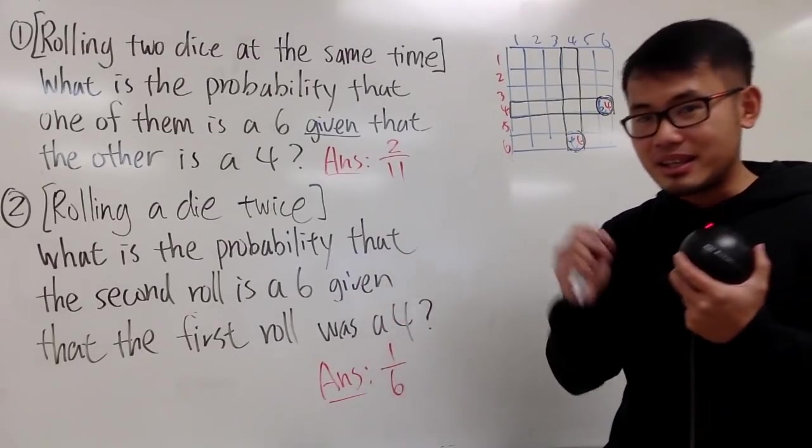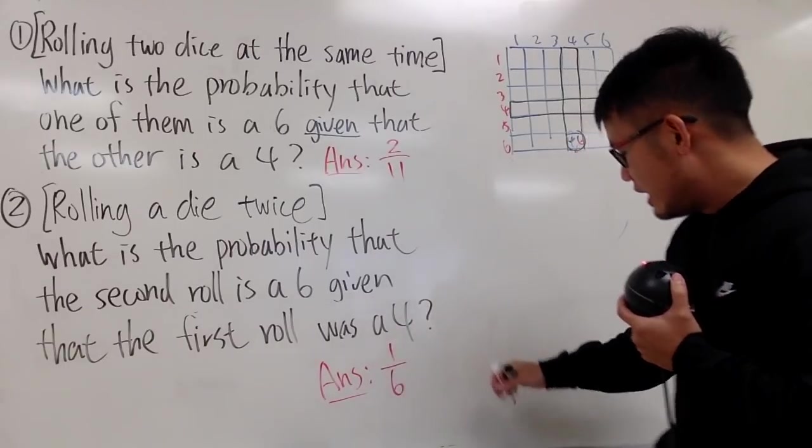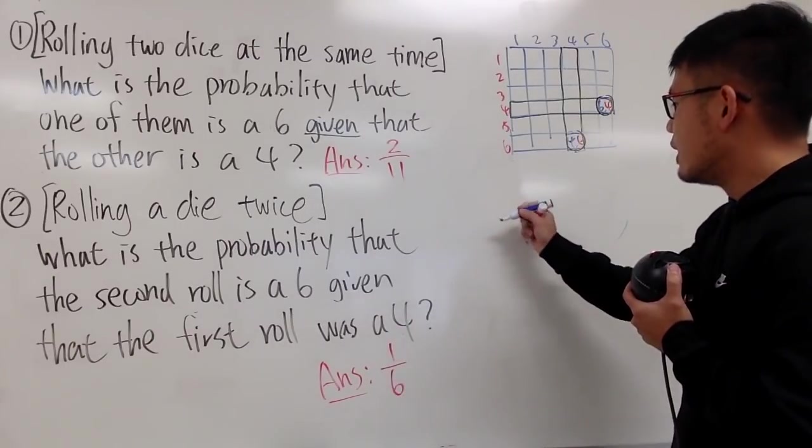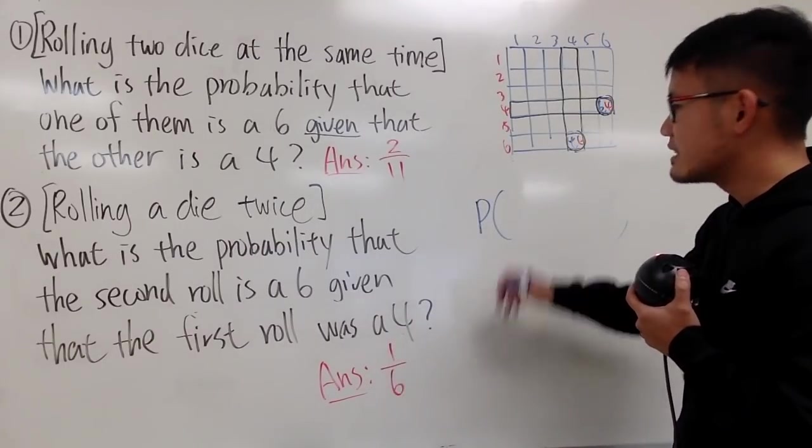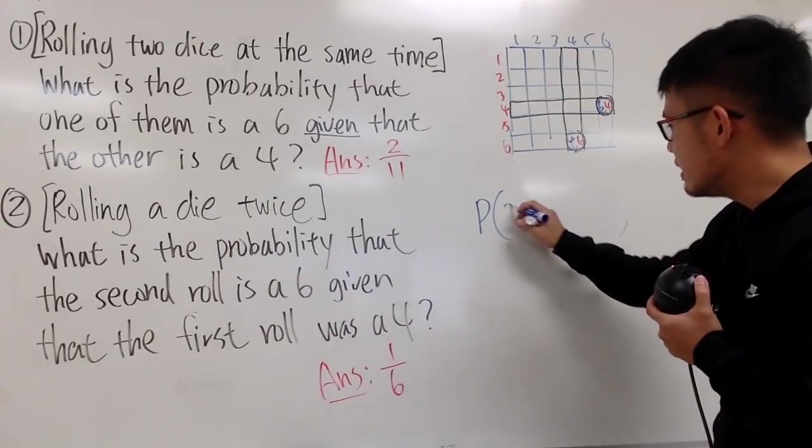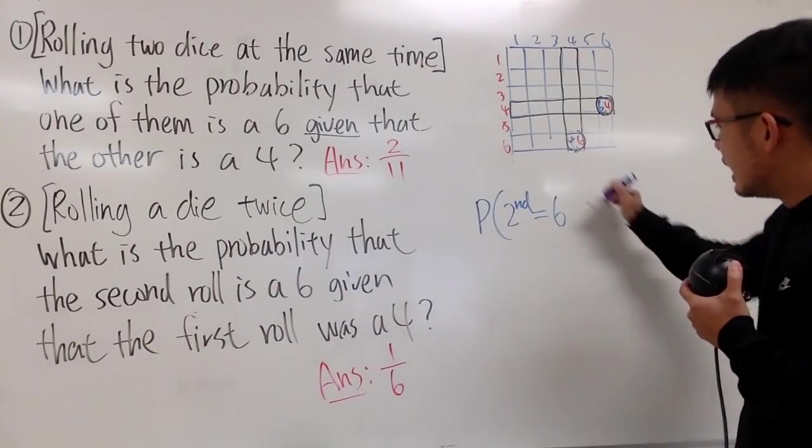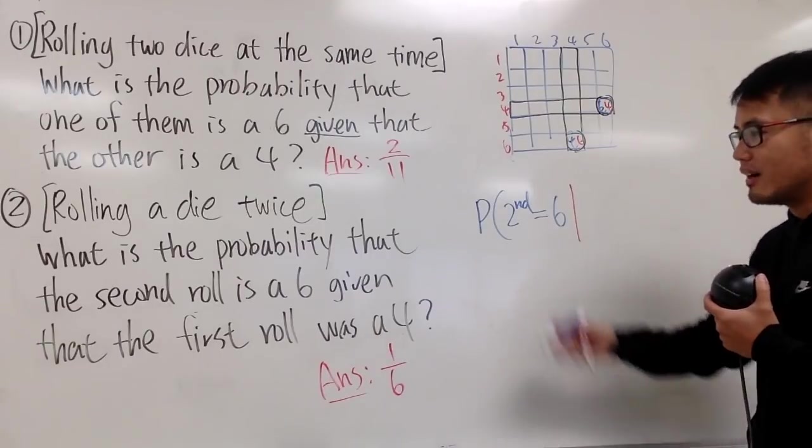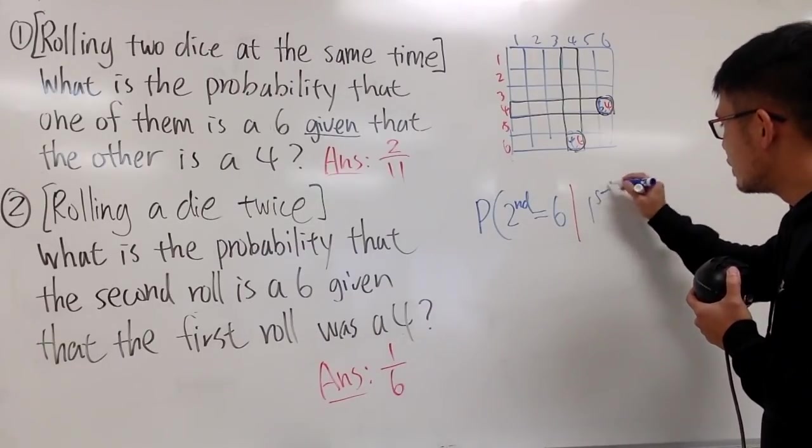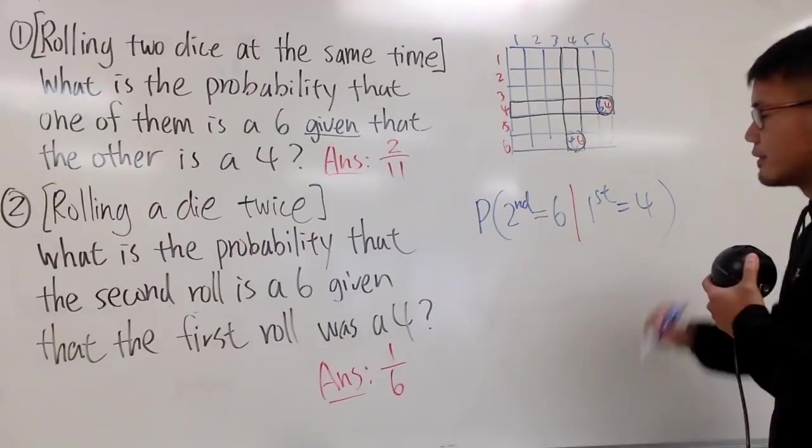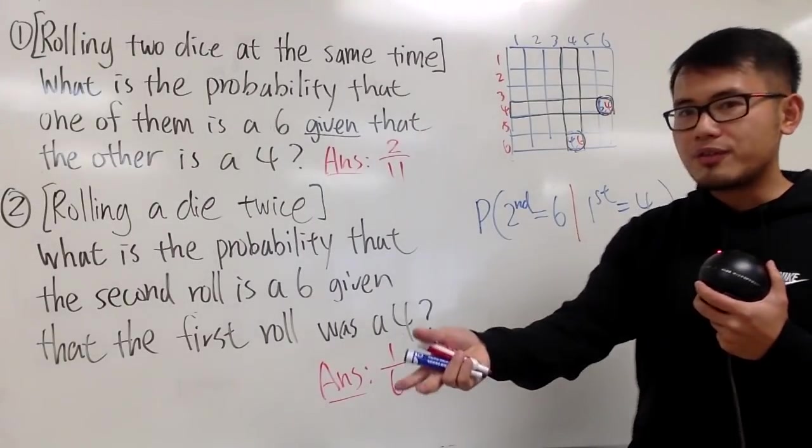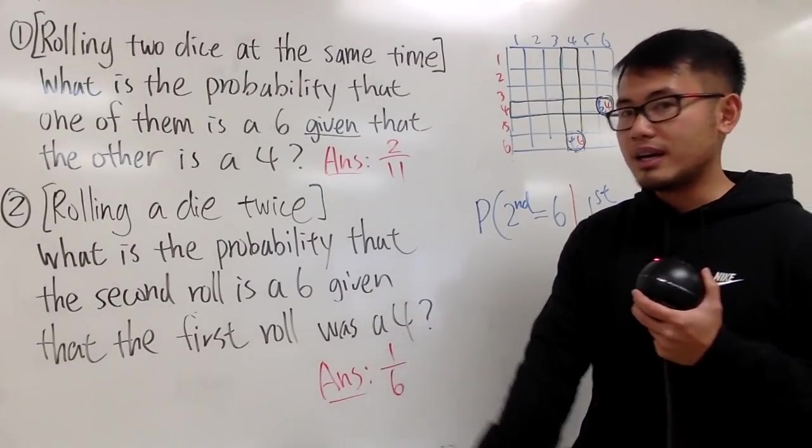So this is kind of like conditional probability as well. And if you would like, you can write this down. We would like to find out the probability that the second roll is a 6, so the second is a 6, given that the first roll was a 4. So, of course, you roll the first time and you see it, it's a 4.